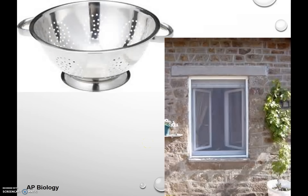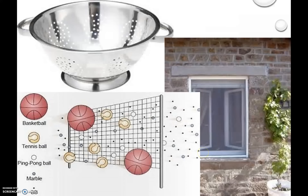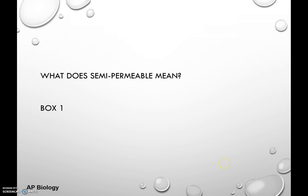A screen on a window lets air and small particles through like dust or pollen, whereas large things like leaves or insects can't cross — so it's selectively permeable. Similarly, if you had a volleyball net and threw balls at it, a basketball wouldn't fit through, but a ping pong ball, a marble, or a BB would. Larger objects are kept on one side while smaller objects can go through, so the net is semi-permeable, just like the cell membrane. In your first box, write down what semi-permeable means.